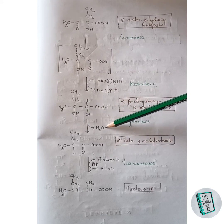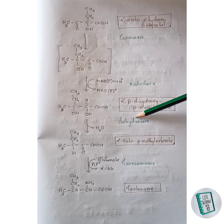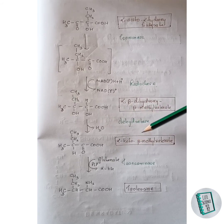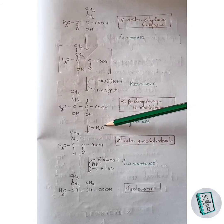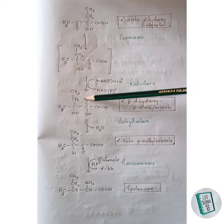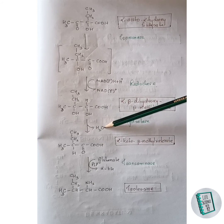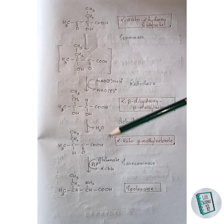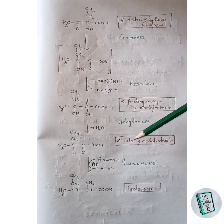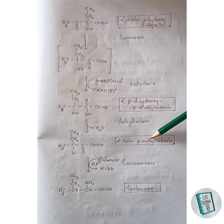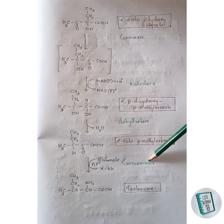This compound undergoes dehydration — that is, removal of a water molecule — in the presence of dehydratase enzyme to form alpha-keto-beta-methyl valerate. The two hydrogen atoms of the water molecule are removed from the respective positions, and the oxygen is also removed, giving us alpha-keto-beta-methyl valerate.